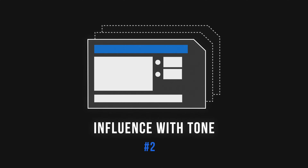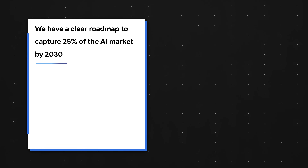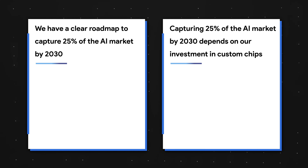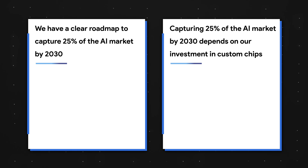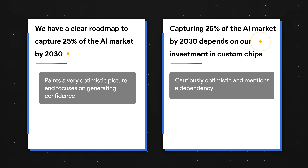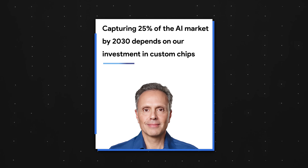Presentation tactic number two is a sneaky one: learn to influence with tone. Compare these two statements: 'We have a clear roadmap to capture 25% of the AI market by 2030,' versus 'Capturing 25% of the AI market by 2030 depends on our investment in custom chips.' These could be headlines for the exact same slide, except the first paints an optimistic picture focused on generating confidence, while the second is cautiously optimistic and explicitly calls out that success depends on custom chips. If you're head of chip manufacturing, you'd go with option two so you can ask for more resources — that's why this tactic is super sneaky.